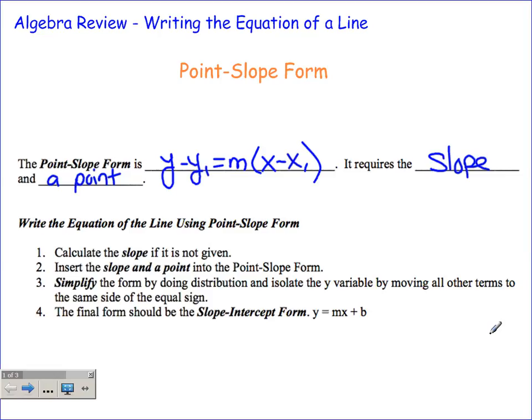We're going to follow this four-step process here. To write the equation of a line using point-slope form, we'll first calculate the slope if it's not given to us. Generally speaking today, things will be given to us. Number two, we're going to insert the slope and a point into the point-slope form. You'll notice that I write out the equation each time and I am actually substituting these into the point-slope form.